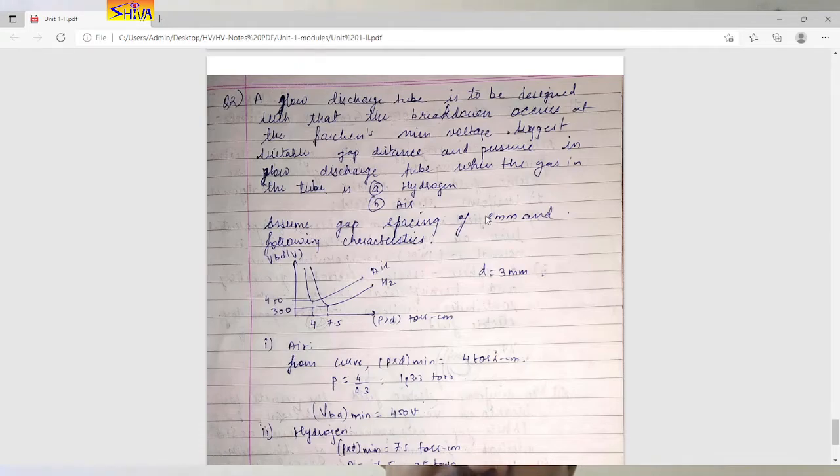Here the gap spacing is fixed that is 3 mm means 0.3 centimeter and characteristic for air and hydrogen is given, that is the Paustian curve for air and hydrogen. Along x-axis it is p into d in torr centimeter. Along y-axis it is breakdown voltage.